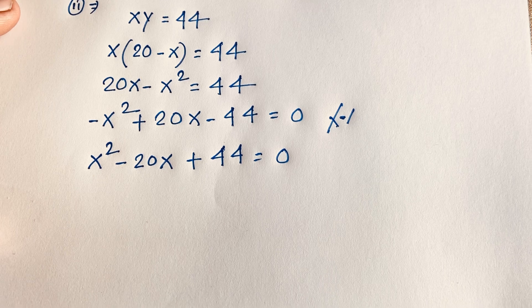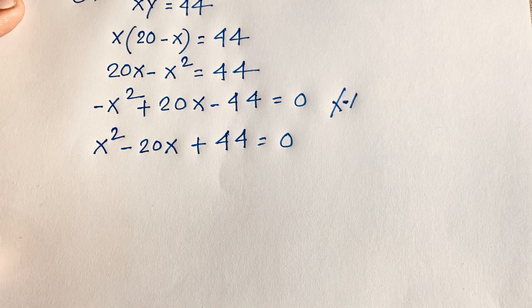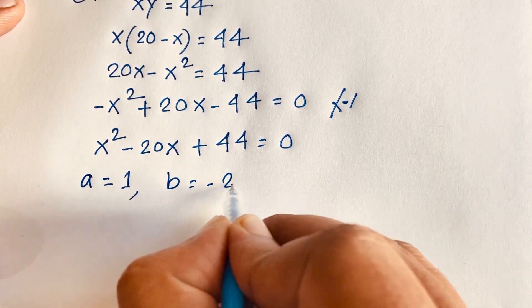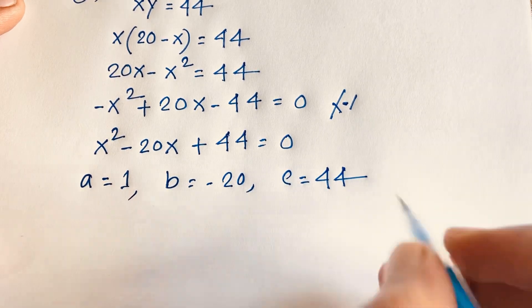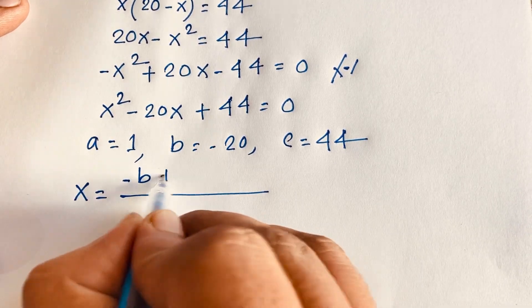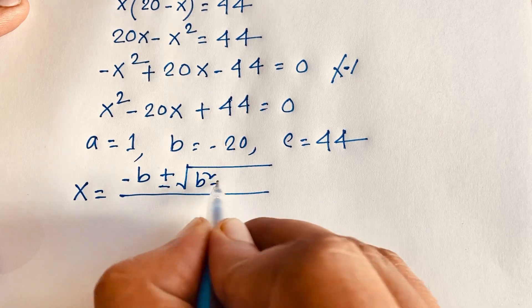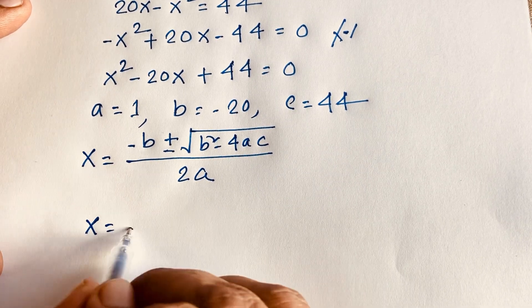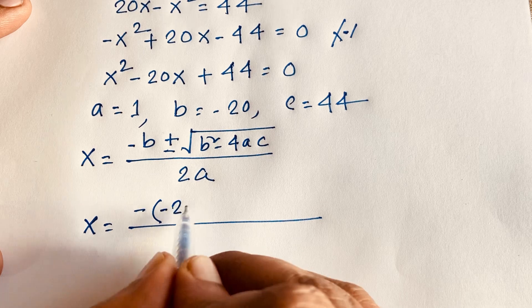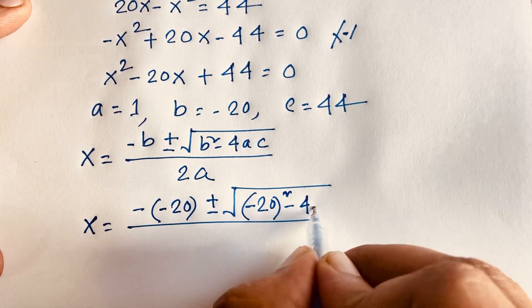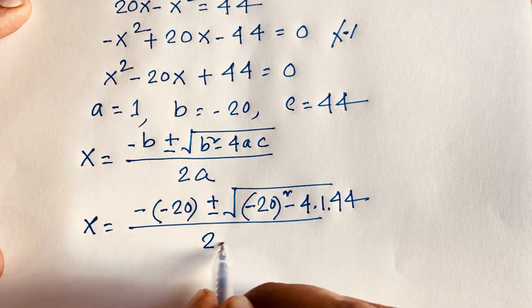Now we have a quadratic equation. We will find the value of x using the quadratic formula. Here a is equal to 1, b is equal to negative 20, and c is equal to 44. The quadratic formula is x equals negative b plus or minus square root of b squared minus 4ac, all over 2a.